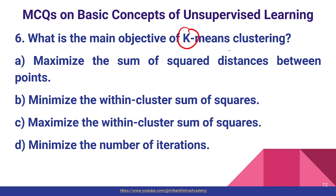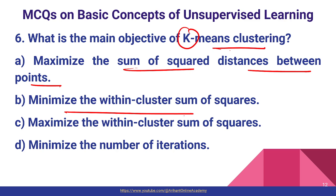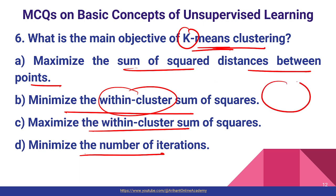Question number six: what is the main objective of k-means clustering? Options include maximize the sum of square distances between points, minimize within-cluster sum of squares, or minimize number of squares. K-means clustering is partitional — it minimizes within-cluster sum of squares. In each cluster it compresses and minimizes so all data points are very similar to each other. Option B — minimize within-cluster sum of squares — is the correct one.